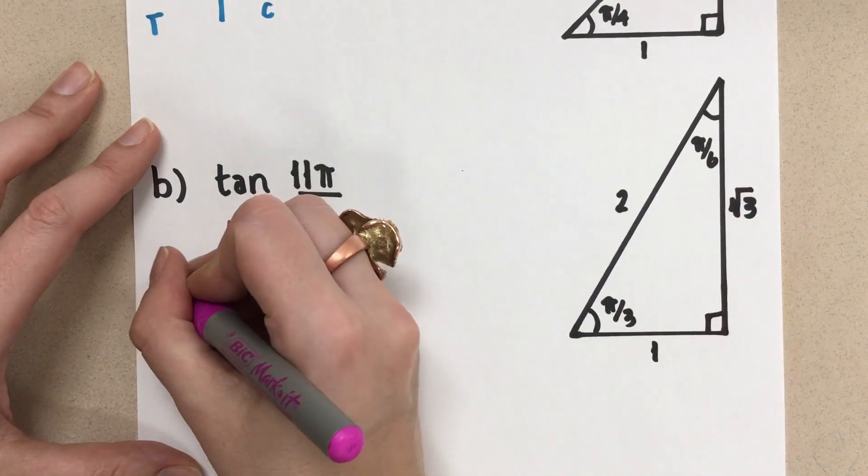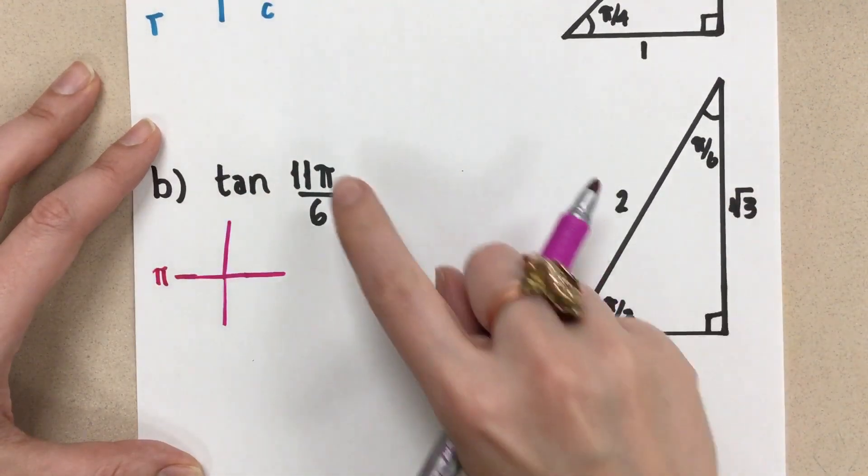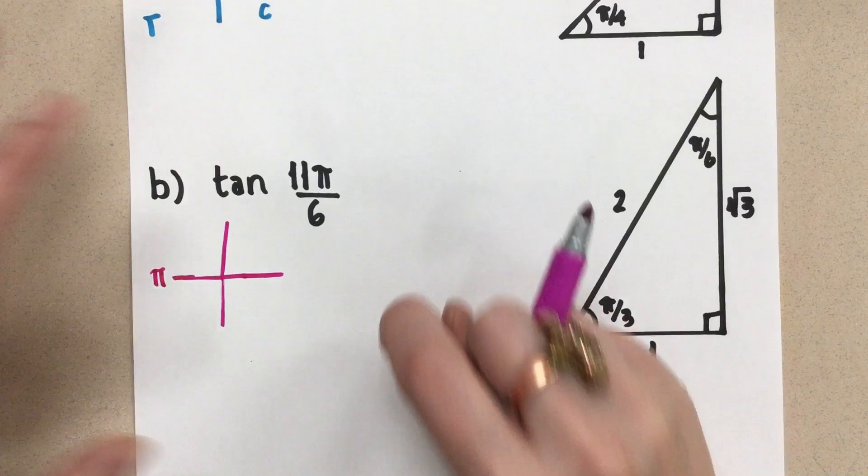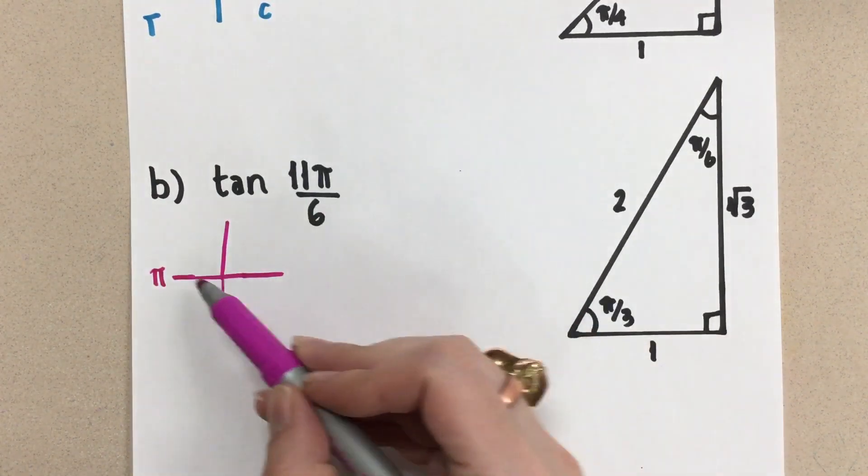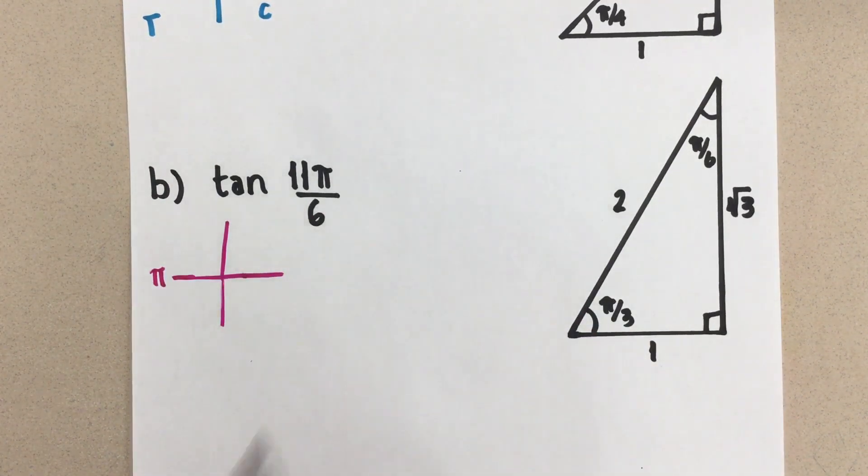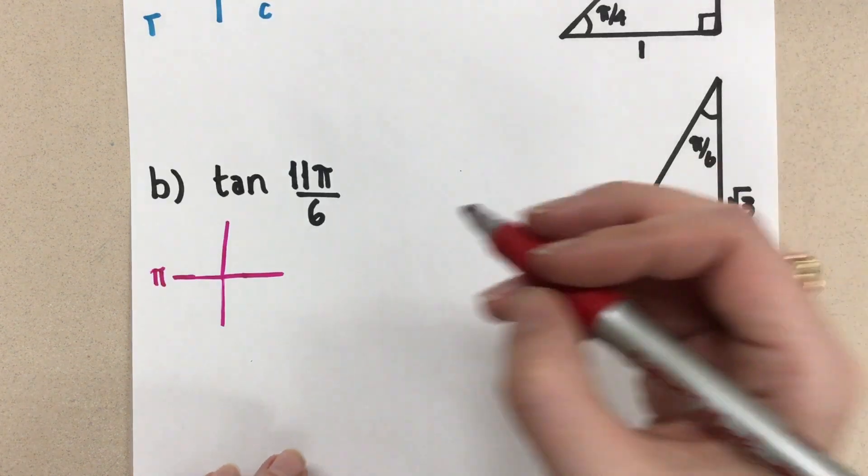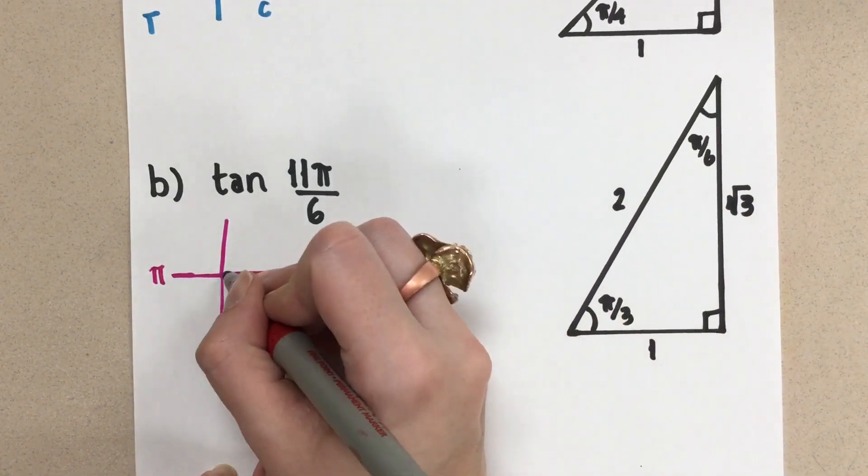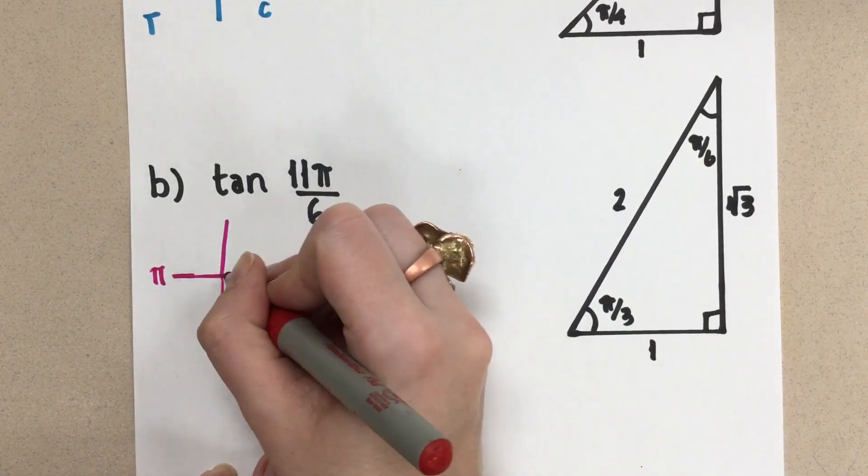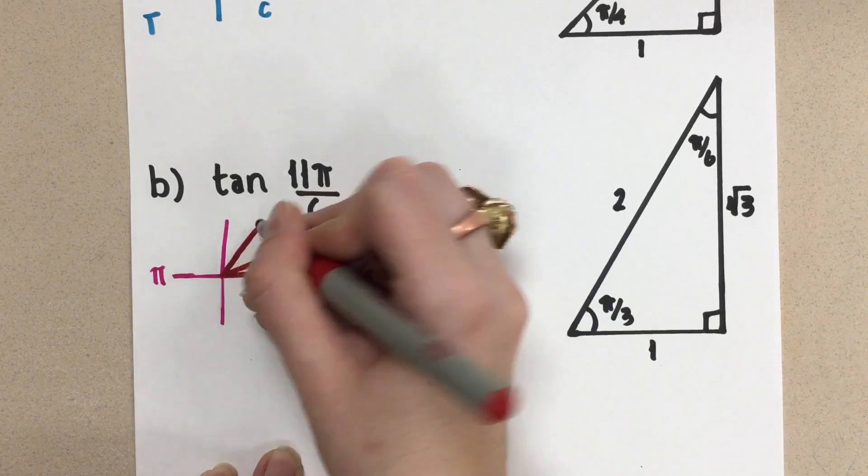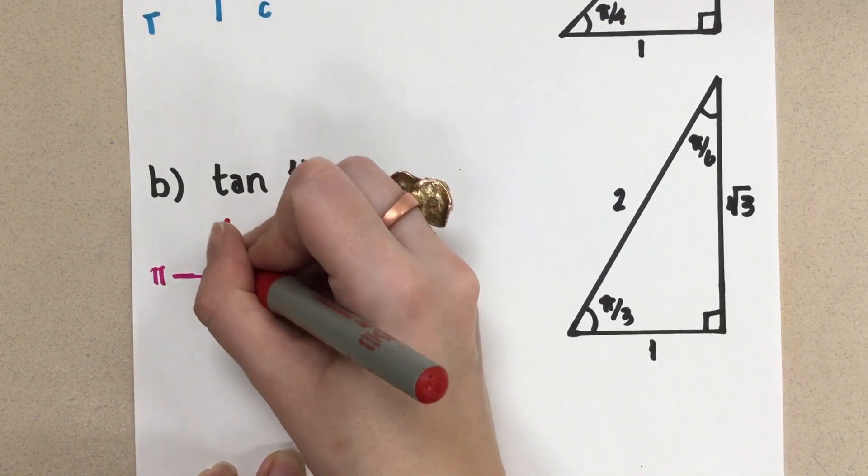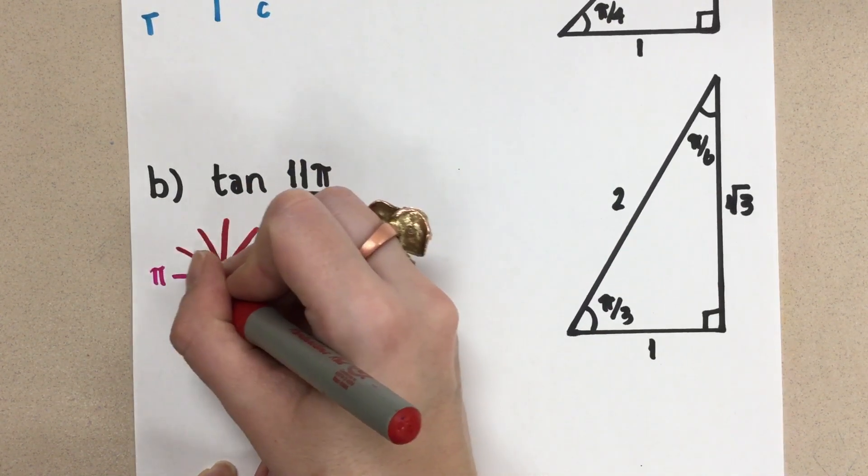And I'm looking for 11π over 6. So now, remember, π is always half the circle. I want 11 sixths of π. So I'm going to break up 1 π, that's the half circle, into sixths. And then I'm going to count out 11 of them. So if I break this into 6, if I start here, 1, 2, 3, 4, 5, 6.